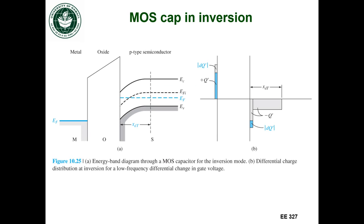What we said was happening in the ideal case is: if we change the voltage on the metal, we're going to change the charge on the metal, and that corresponds to a change in charge in the inversion layer. So if we're changing charge in the inversion layer — I increased the voltage, positive voltage on the metal — that increased the charge by this amount, DQ prime. That means I increased the amount of negative charge at the semiconductor-oxide interface by the same amount, DQ prime.